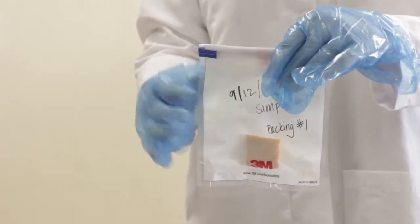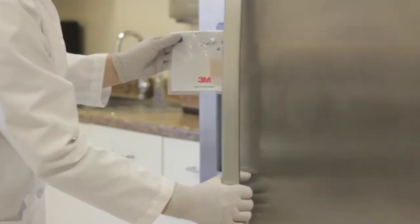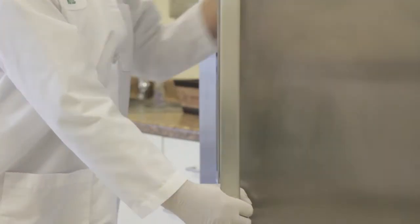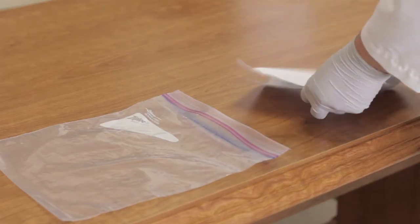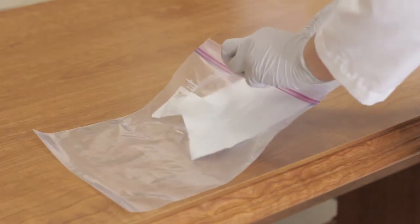Keep the swabs refrigerated at 40 to 45 degrees Fahrenheit until ready to ship the sample to Amtec for analysis. Ship samples with a chain of custody form and ice packs, preferably the same day of collection but no later than the next day.